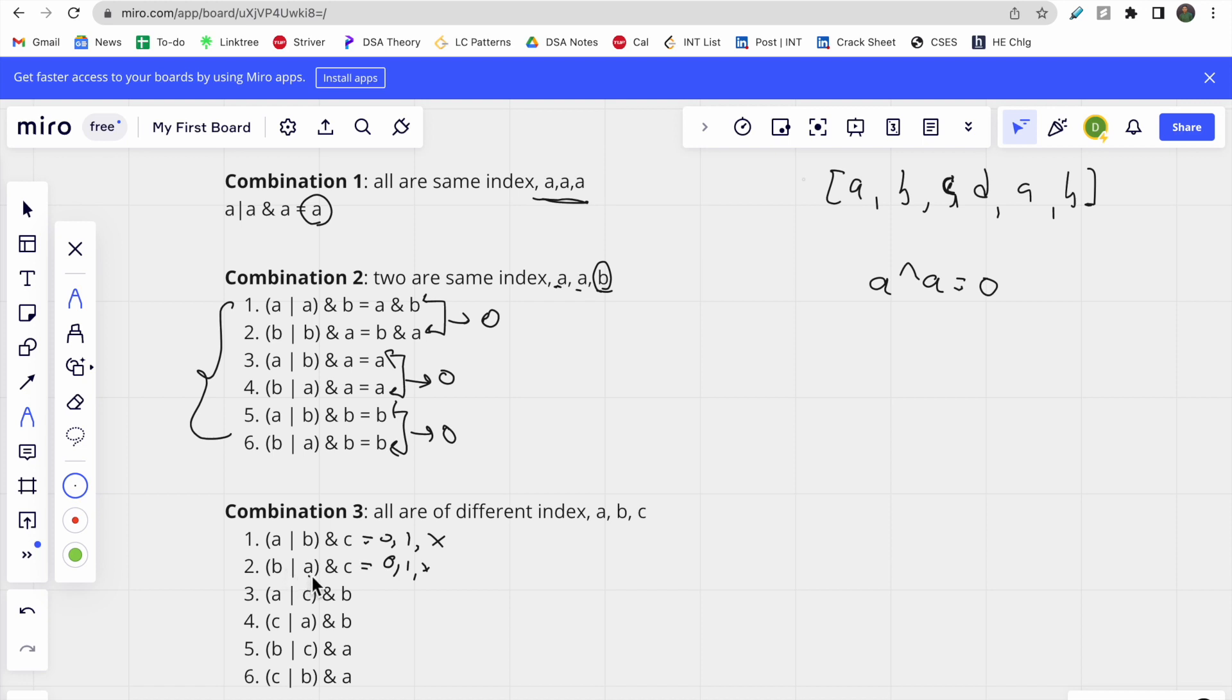Taking XOR of these same results will nullify and give zero. Similarly, all other pairs in this combination will nullify. All combinations in type 2 and type 3 give zero, so the only meaningful combination is type 1 where all indices are the same.